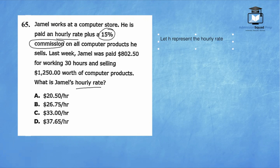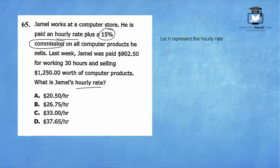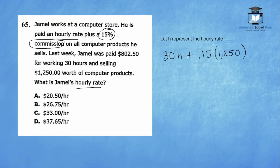Now we set up an equation. Since he worked 30 hours, we have 30 times H, plus 15% expressed as a decimal — 0.15 — times the amount of computer products he sold, which was $1,250. When we add 30H plus 15% of the products sold, we get $802.50. So our equation is: 30H + 0.15 × 1,250 = 802.50.